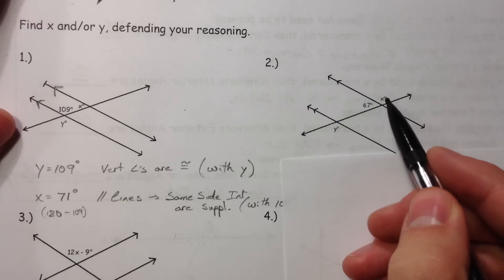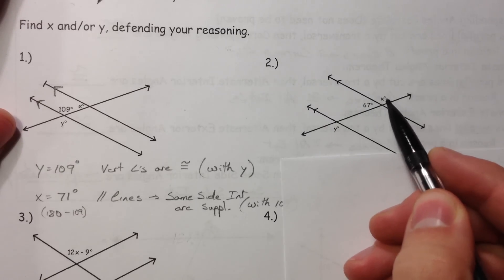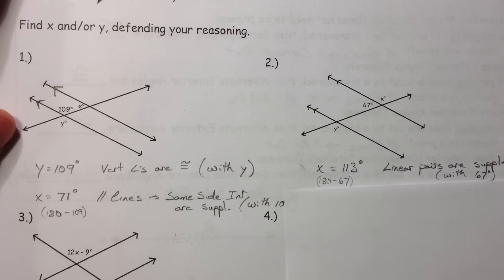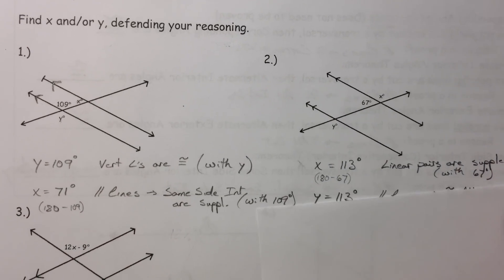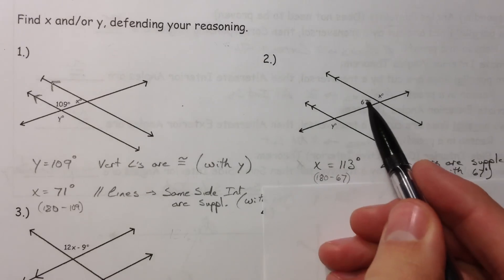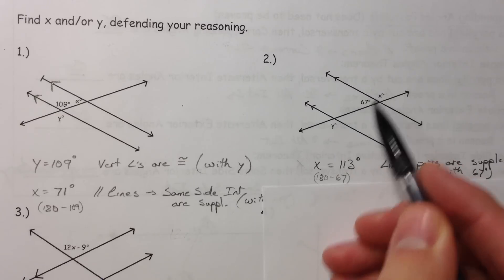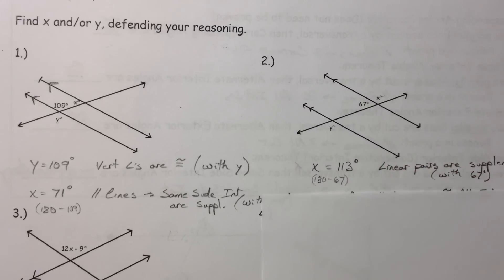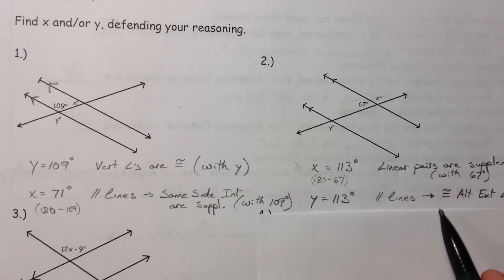Next: X is a linear pair with 67, so 180 minus 67 gives us 113 — linear pairs are supplementary. Then X and Y are alternate exterior angles, so X and Y must be equal, meaning Y is also 113, because parallel lines tell me congruent alternate exterior angles.